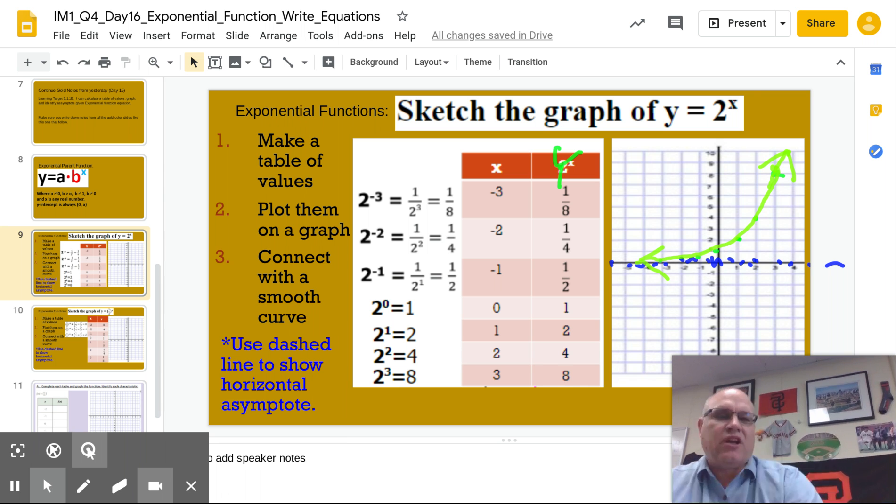For these functions, they're going to be either increasing or decreasing. And sometimes the curve will be above the asymptote. In that case, it will be y is greater than the asymptote. Sometimes the curve will be below the asymptote. And in that situation, it will be y is less than the asymptote value.